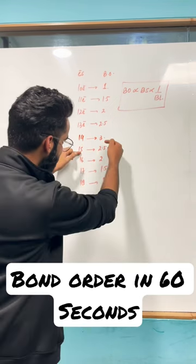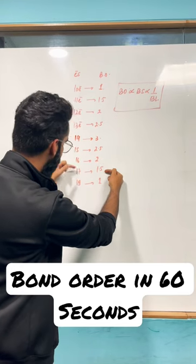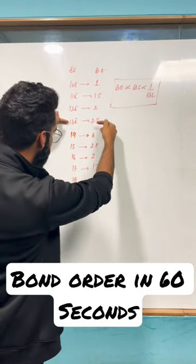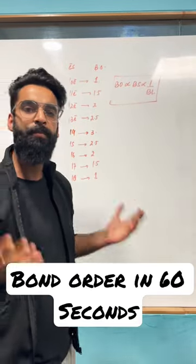Now 15 electron species, reduce it by 0.5. 16 electron species, reduce it by 0.5. 17, reduce it by 0.5. Similarly, 13 electron species, reduce it by 0.5. Keep on reducing it. You will be getting the bond order of different species.